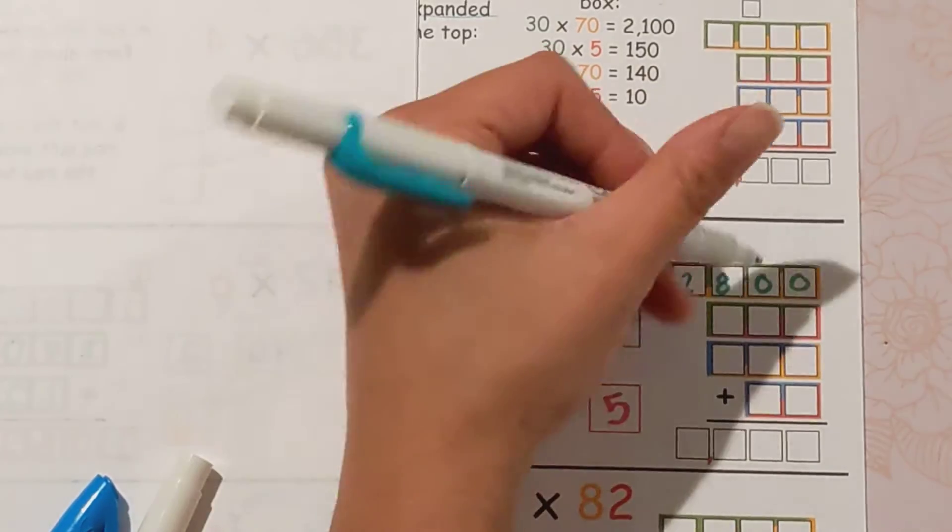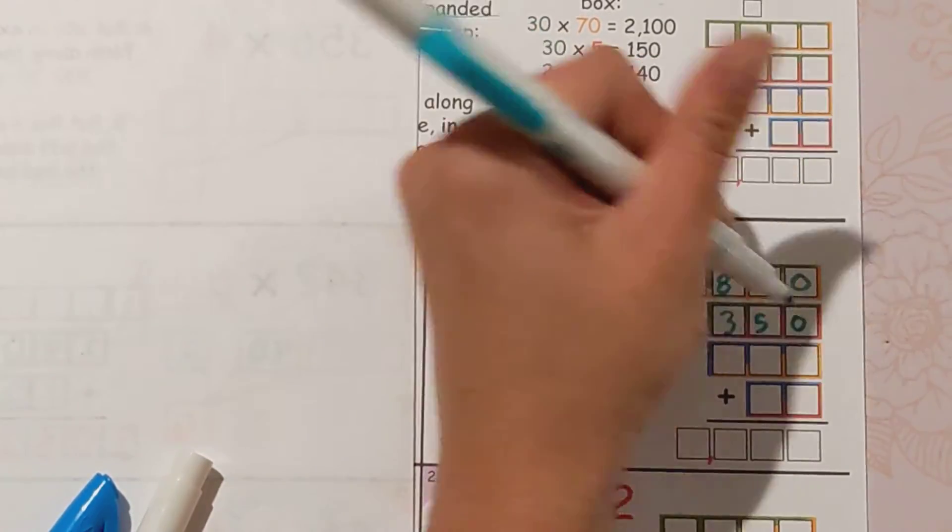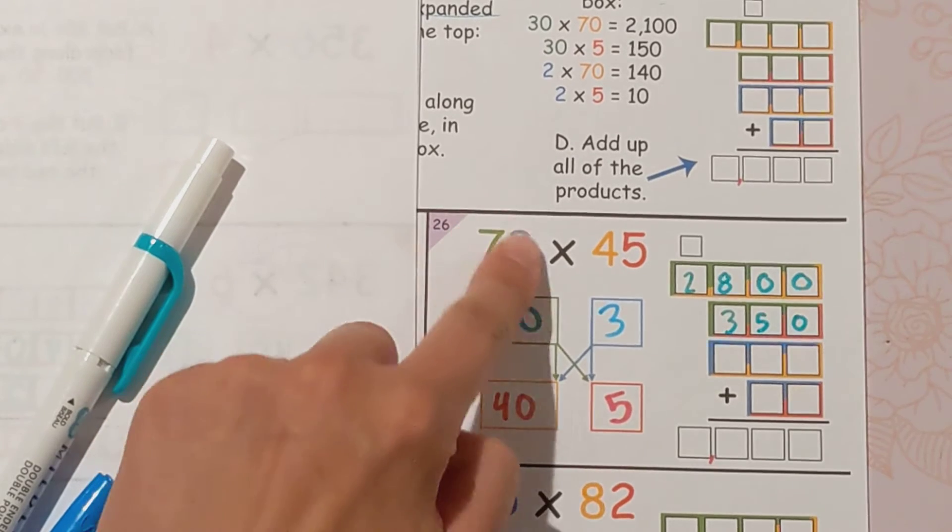70 times 5: so we're only dealing with one zero here. Seven times five is 35 with a zero, 350. Finished with the seven, now we'll do the three across and down.